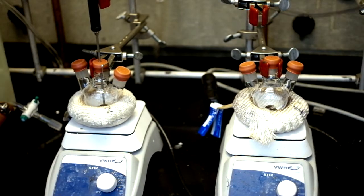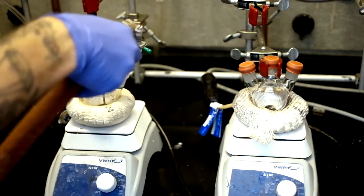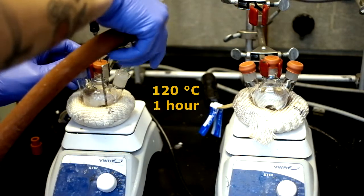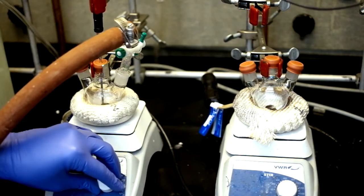Place a temperature probe in each of the two flasks, then place each of the two flasks under vacuum at 120 degrees Celsius for one hour, and then turn on the stir bars.